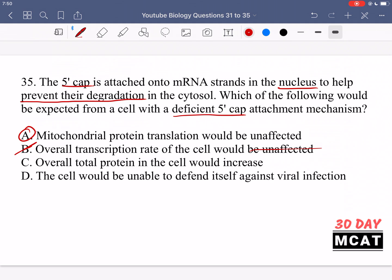The cell is going to notice that because it wants to transcribe a gene and then create the product of that, the protein product, but it's not seeing that product being formed. So it's actually going to upregulate transcription to counteract this problem. So we can't say that transcription of the cell would be unaffected. It would actually be upregulated.